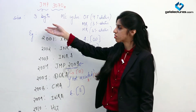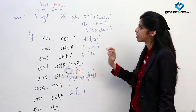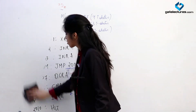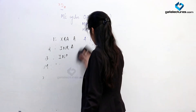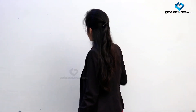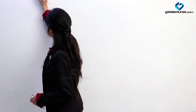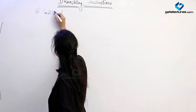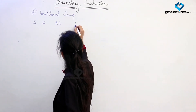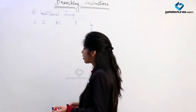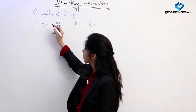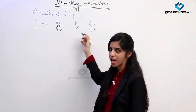Unconditional jump means whenever JMP with a 16-bit address comes, no instruction in between is going to be executed — you jump directly to the given address. This is a 3-byte long instruction with 3 machine cycles: opcode fetch and 2 memory reads. Next we have conditional jump. The 8085 microprocessor has 5 flags. Based on those flags we have conditional jumps. We are not having any jump instruction for the auxiliary carry flag, but we have jump instructions based on sign, zero, parity, and carry flags.